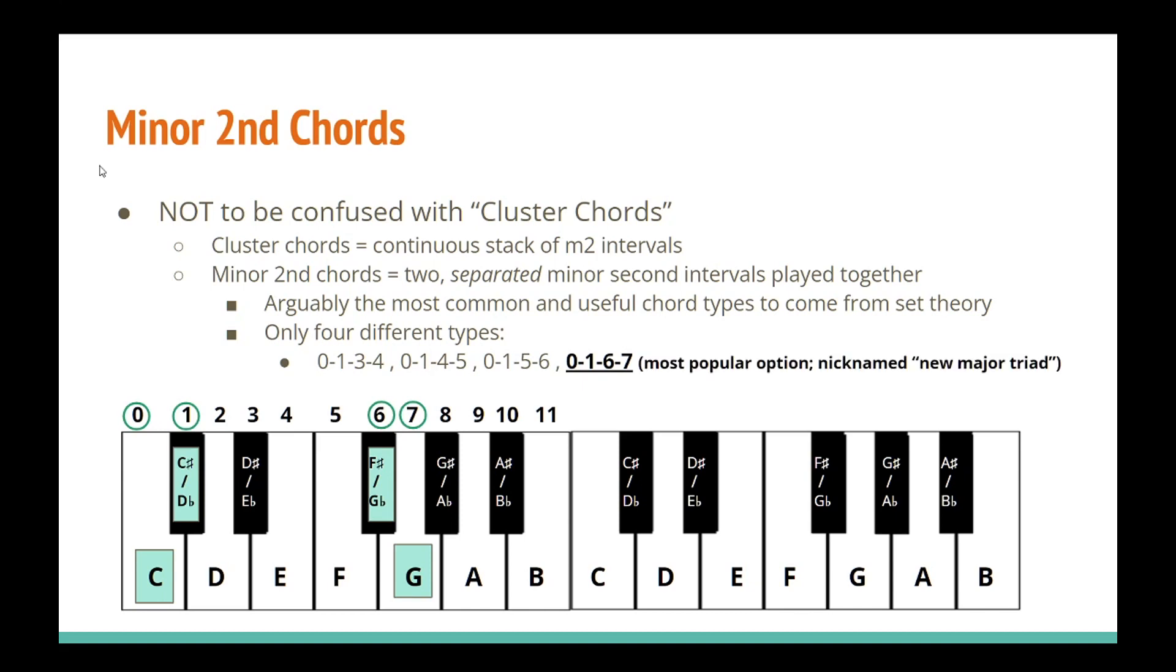And then finally, there's the 0-1-6-7 chord, which consists of two minor second intervals separated by two whole steps. This one in particular is quite popular and was largely known as the new major triad in 20th century modernist music. So if you don't remember anything else from this video, just remember that this chord is very useful for creating scary and suspenseful music. Just write out your bass line and then build a bunch of these chords from it.